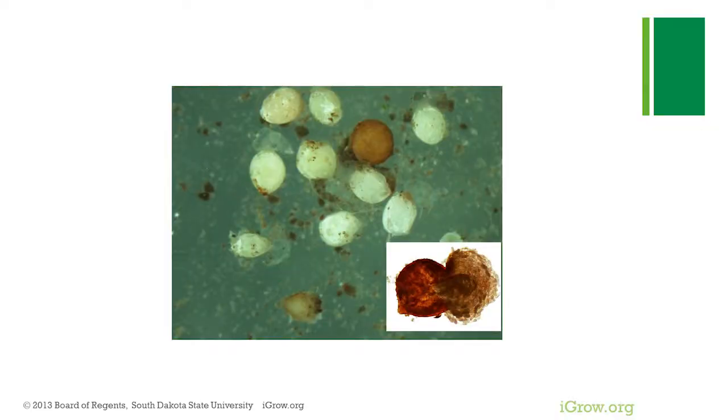Now I'll talk about the biology of the soybean cyst nematode. It's a non-segmented roundworm and it's an animal, so like any other animal it has three stages: egg, juvenile, and adult. The juvenile is further divided into four stages, so it molts four times before it becomes an adult. The first two juvenile stages happen inside the egg.